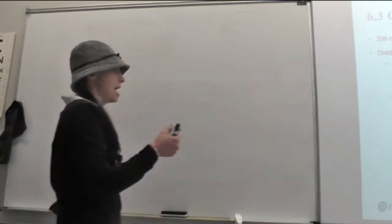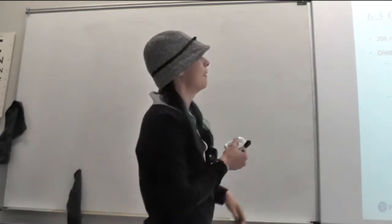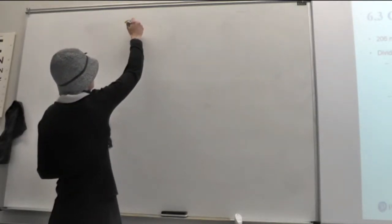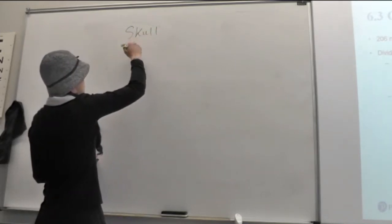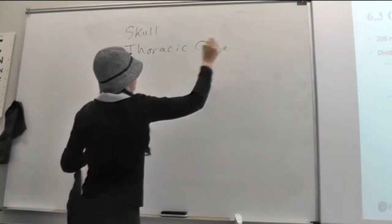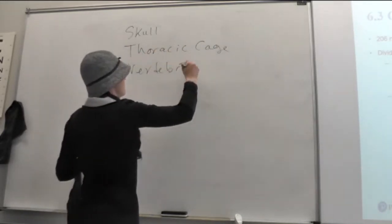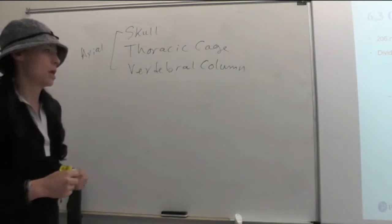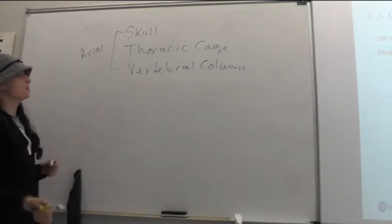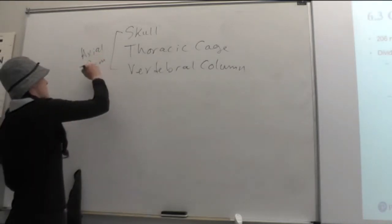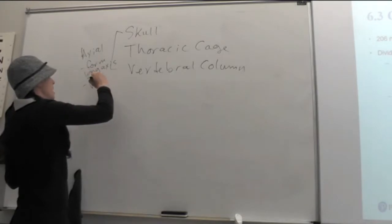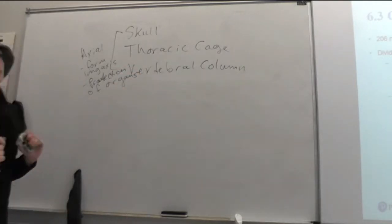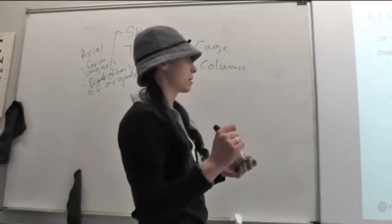So, we divide it first into our axial and then our appendicular skeleton. Our axial skeleton contains the skull and our thoracic cage and our vertebral column. So, these are our axial bones. And if we think about functions of the axial bones, they form the long axis of the body. These are the ones that really do our protection of all of our organs. This is going to be where most of our hematopoiesis occurs as adults. See, some of the ends of our long bones have spongy bone.